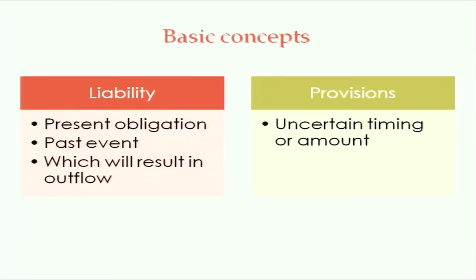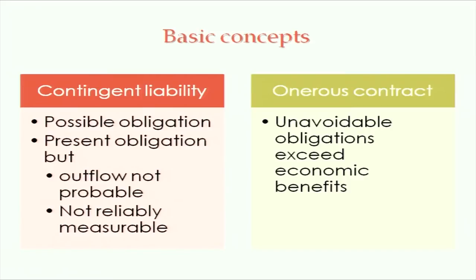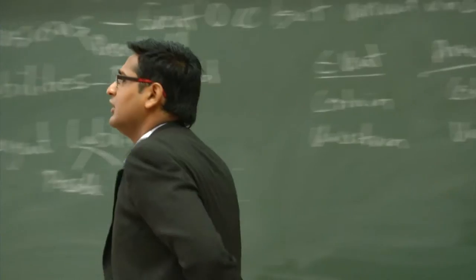Liability is a present obligation because of a past event. If I am going to receive goods in future, the event is also in future — so it is not a liability. Liability is because of a past event which will result in outflow of economic resources. Provision is when timing or amount is uncertain. Contingent liability can be a possible obligation — where the obligation itself is uncertain, the event itself is uncertain — or it can be a present obligation where outflow is not probable or the amount cannot be measured. For example, sometimes a court says you are guilty but the amount of compensation will be decided in the next hearing — that becomes a present obligation but with uncertain amount, so it becomes a contingent liability.